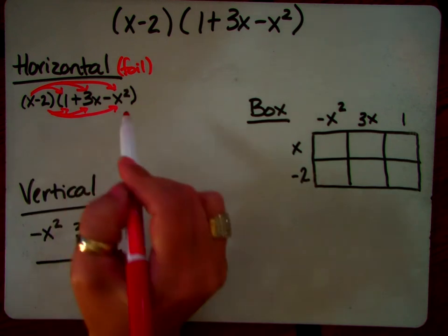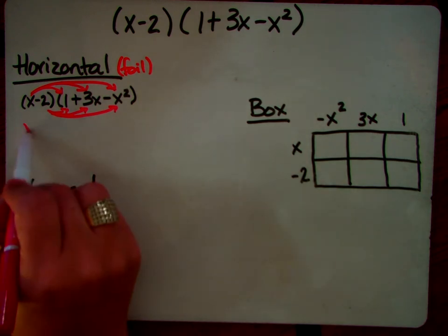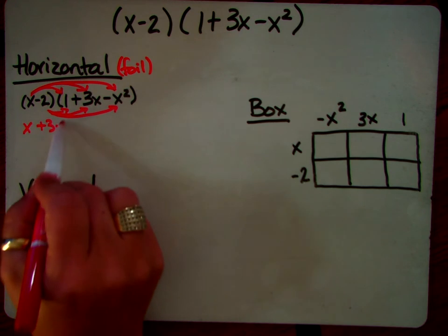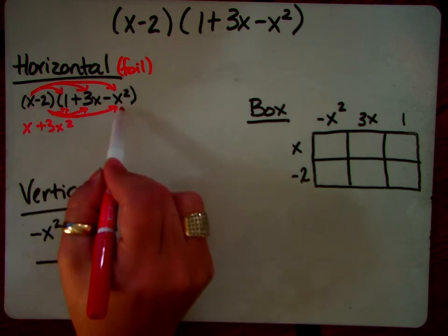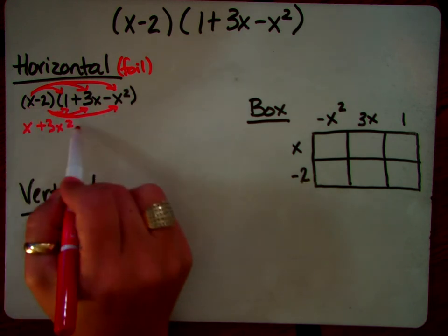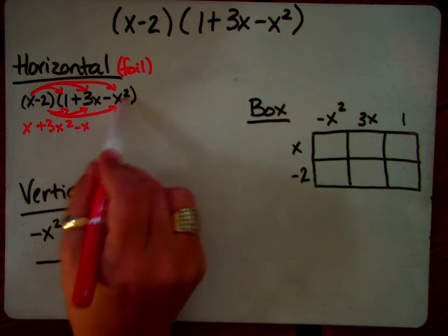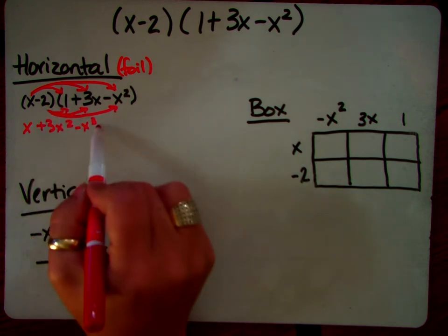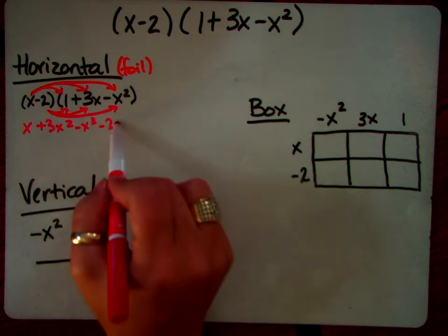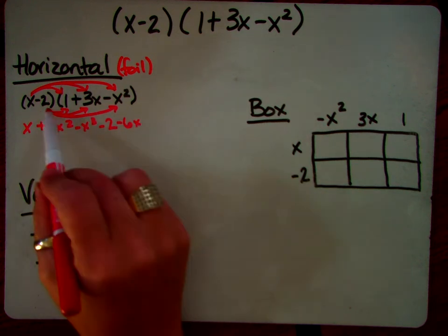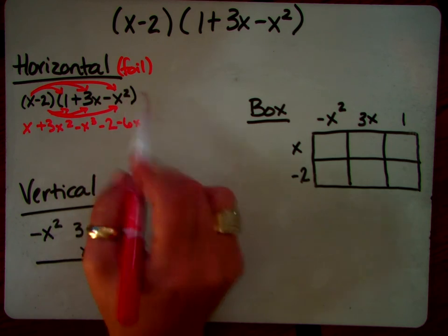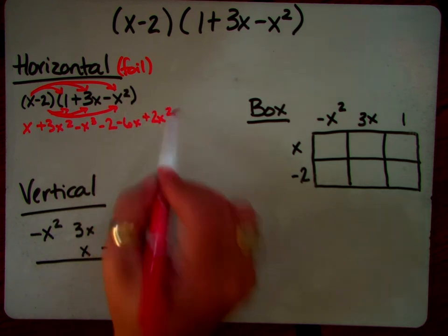So if we were to write this out, you get x times 1 is x. X times 3x is 3x squared. x times negative x squared is a negative x cubed. Negative 2 times 1 is negative 2. Negative 2 times 3x is negative 6x. And negative 2 times another negative x squared is a positive 2x squared.